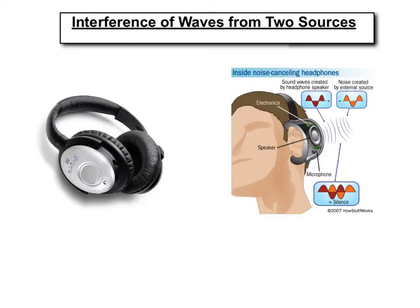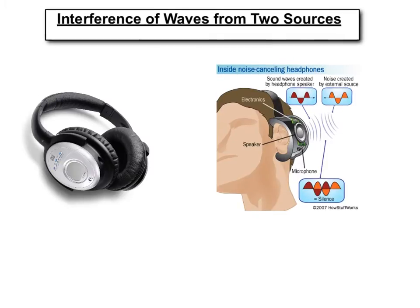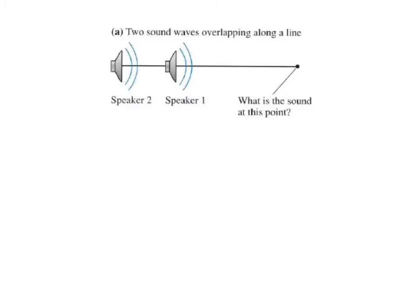We began this unit by talking about how waves, unlike particles, can pass through each other. And where they do, the principle of superposition tells us that the displacement of the medium is the sum of the displacements due to each wave acting alone. Suppose we have two speakers, both of them emitting the same frequency. The sound coming from speaker two passes speaker one, and then the two overlapped sounds continue on to a point. The question is, what sound is heard at that point?